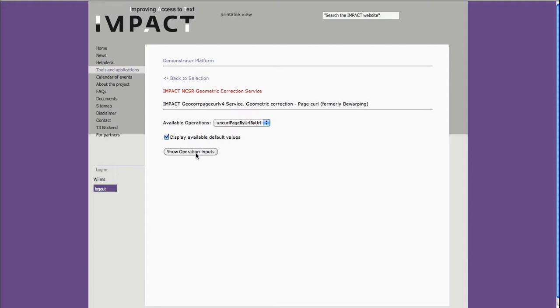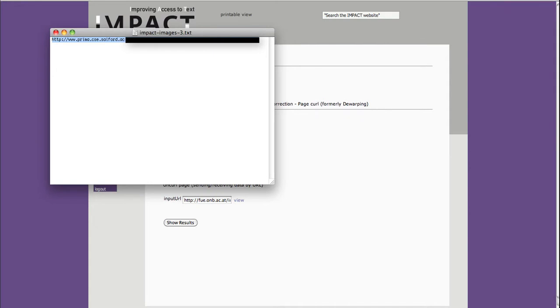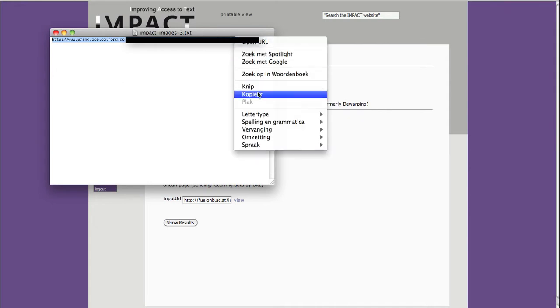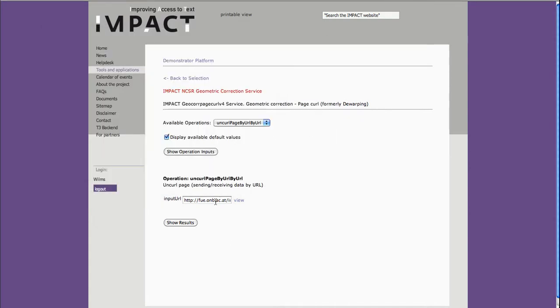It gives me the web services, and I can just click show operation inputs to get the input. I have my image in a text file, so I can just go to the text file and copy my image and paste it in here. And then I just click show results, and it will give me the results.